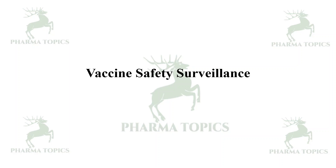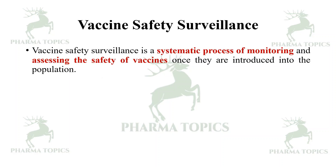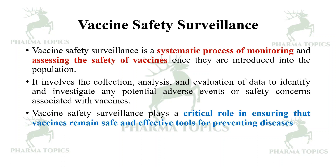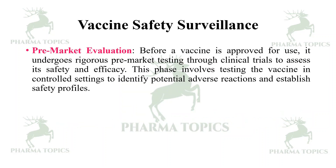Vaccine safety surveillance is a systematic process of monitoring and assessing the safety of vaccines once they are introduced into the population. It involves the collection, analysis, and evaluation of data to identify and investigate potential adverse events or safety concerns associated with vaccines. Vaccine safety surveillance plays a critical role in ensuring that vaccines remain safe and effective tools for preventing diseases.